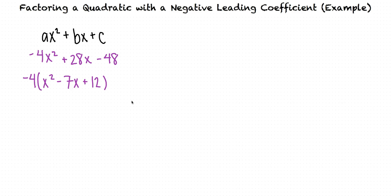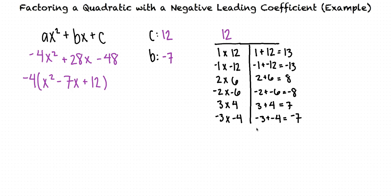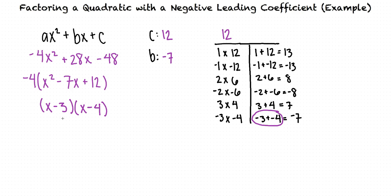To do this, we need to find what numbers multiply to our c term, which is 12, and what numbers add to our b term, which is negative 7. Let's make a list of pairs of factors that multiply to 12, then see which pair adds to negative 7. Negative 3 and negative 4 multiply to 12 and also add to negative 7, so those are the numbers we'll use. Because this expression has a leading coefficient of 1, we put these numbers directly into the factors: x minus 3 and x minus 4. With negative 4 still out front, this is our final factorization.